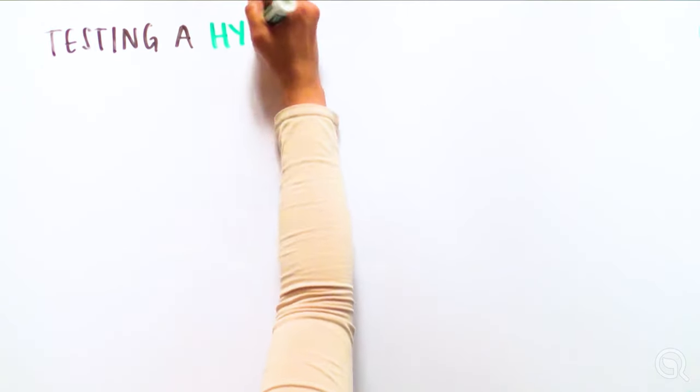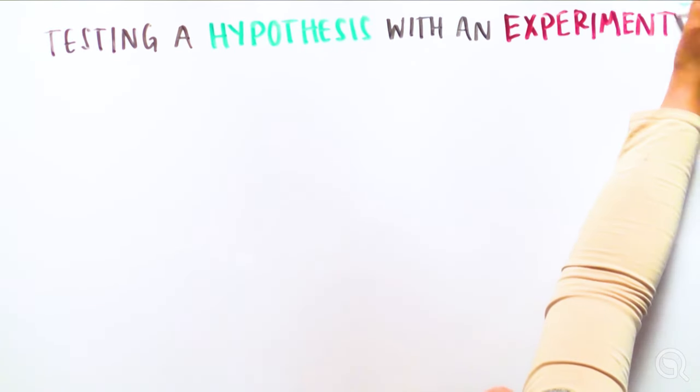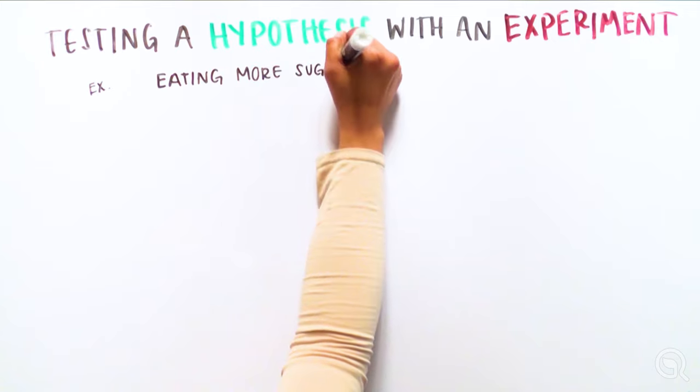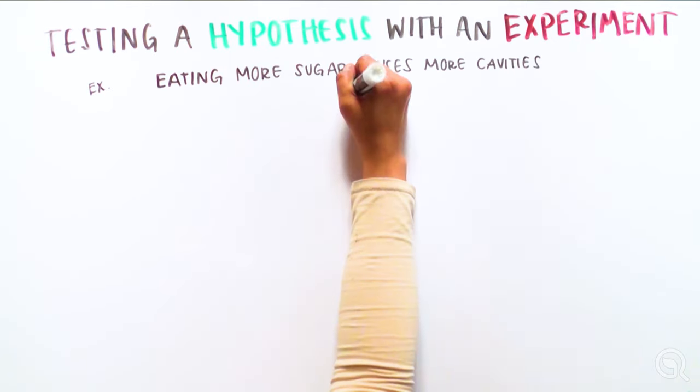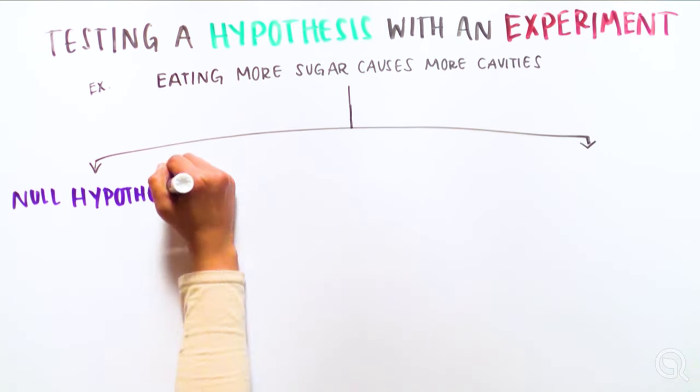Once we have a hypothesis, we need to test it with an experiment. To do so, we first write the hypothesis as two competing claims: the null hypothesis and the alternative hypothesis.